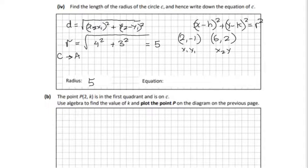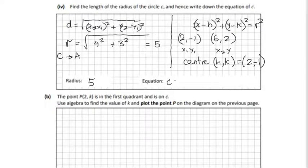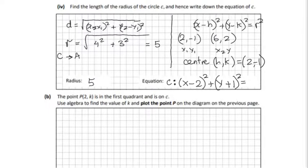Now we have r = 5, so r² = 25. For the circle equation, the center (h, k) is point C = (2, −1). Substituting h = 2 and k = −1 into the formula: (x − 2)² + (y − (−1))² = 25, which gives (x − 2)² + (y + 1)² = 25. Be careful — the sign always changes when you substitute into the formula.